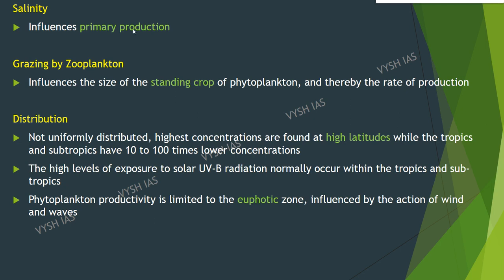Salinity influences primary production. Grazing by zooplankton influences the size of the standing crop of phytoplankton and thereby the rate of production, as they consume phytoplankton. Distribution — marine phytoplanktons are not uniformly distributed; highest concentrations are found at high latitudes, while the tropics and subtropics have 10 to 100 times lower concentrations.